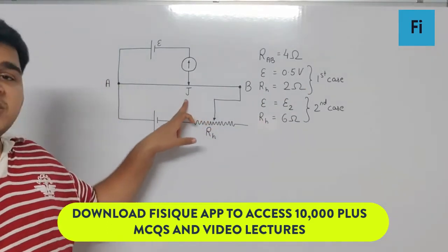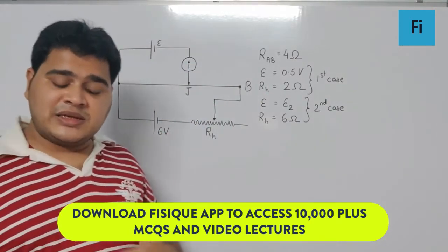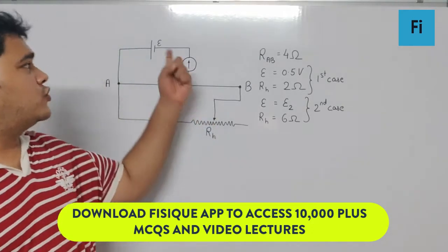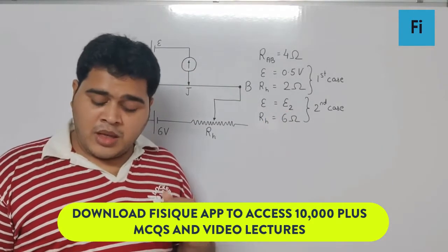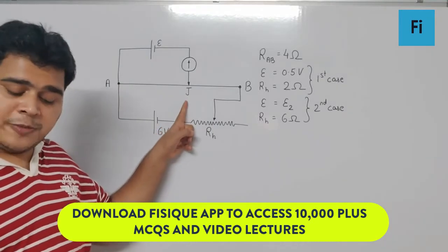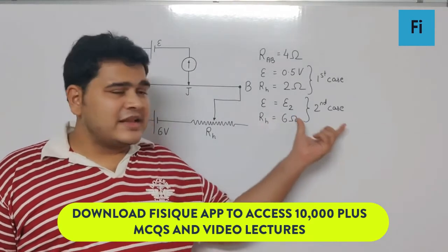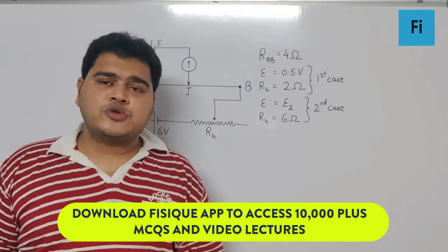When the cell is replaced by another one of EMF E2, the same null point J is obtained for R_H equal to 6 ohms. This becomes the second case, and in both cases the balancing length is the same. We are supposed to find the value of E2.